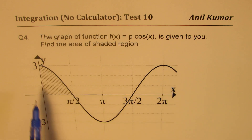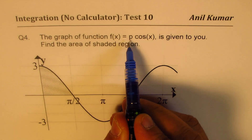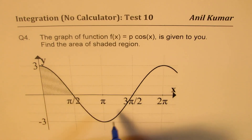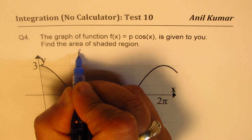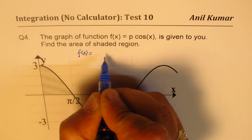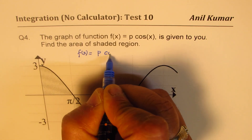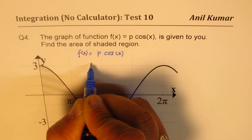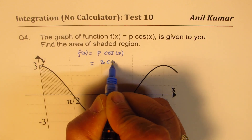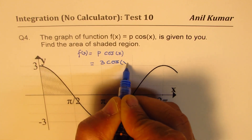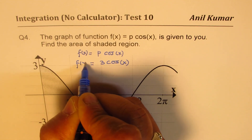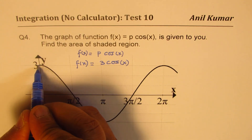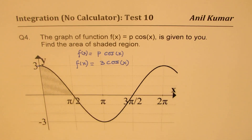So that's the graph. You can always pause the video and answer this question. From the graph, we know what p is. p should be 3, looking at the graph. So the function f of x can be written as p·cos x, which is 3·cos x, since the maximum value given to us is 3.